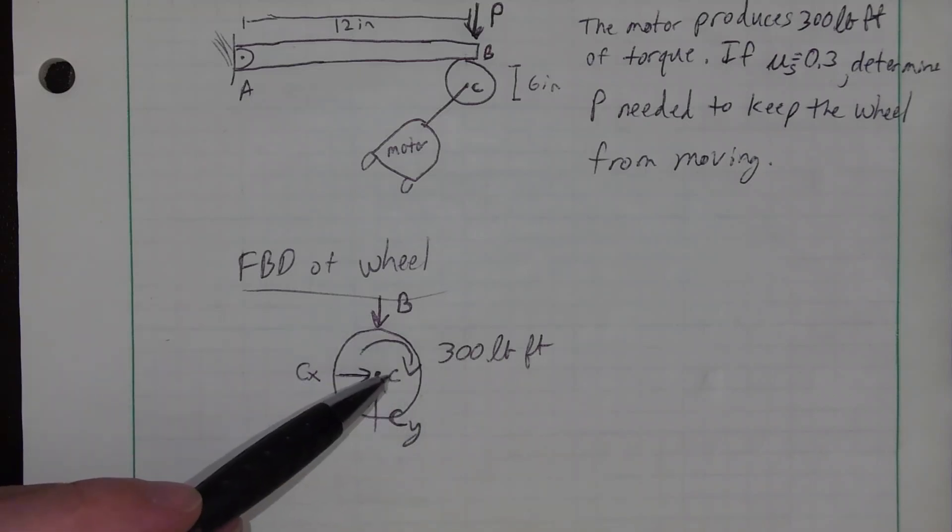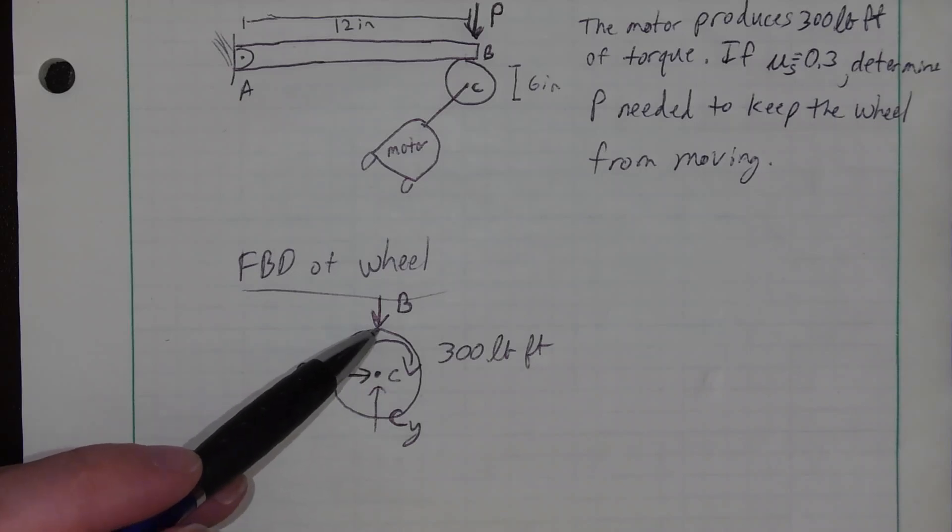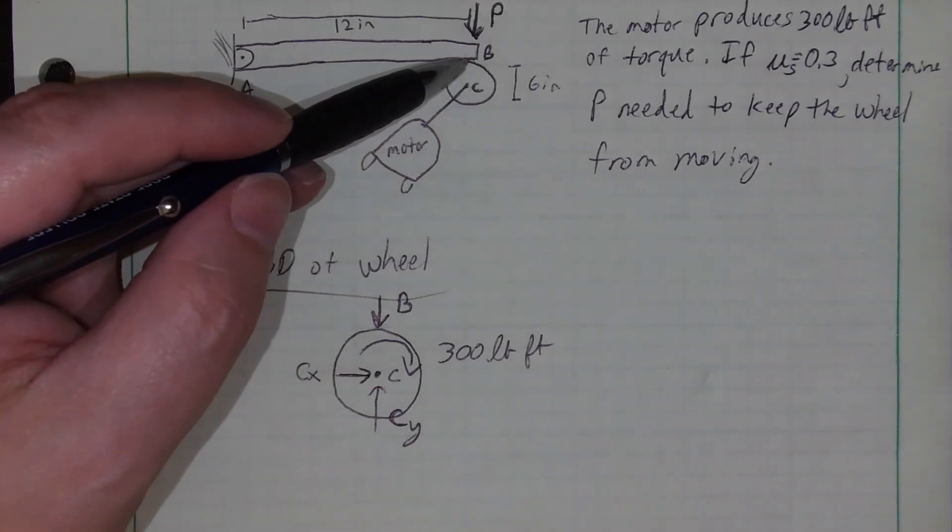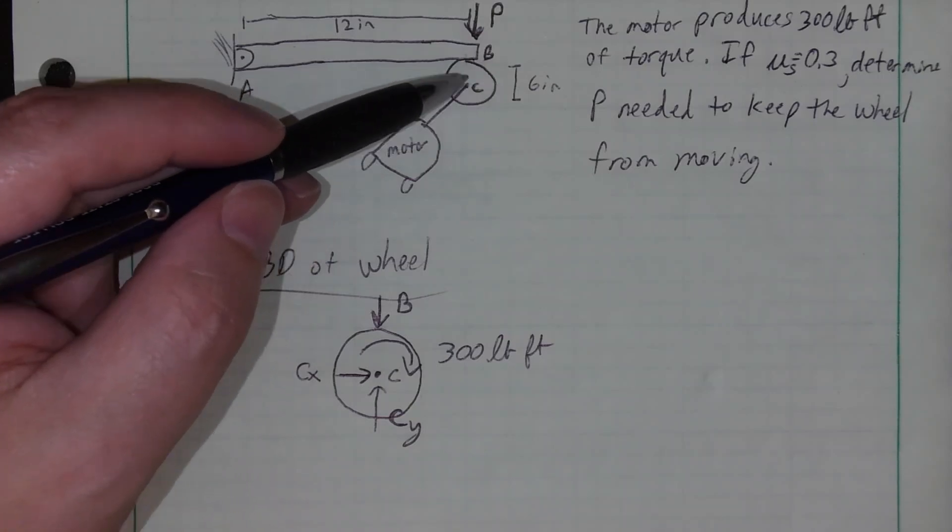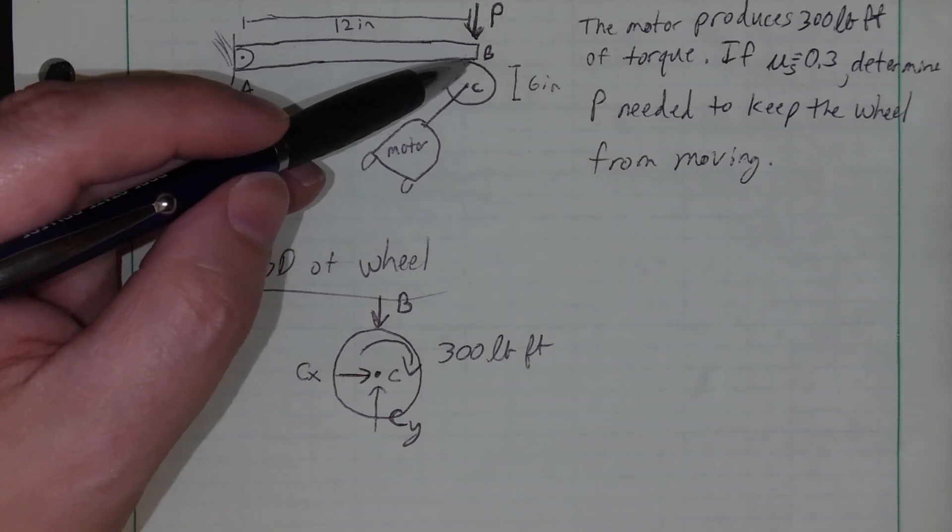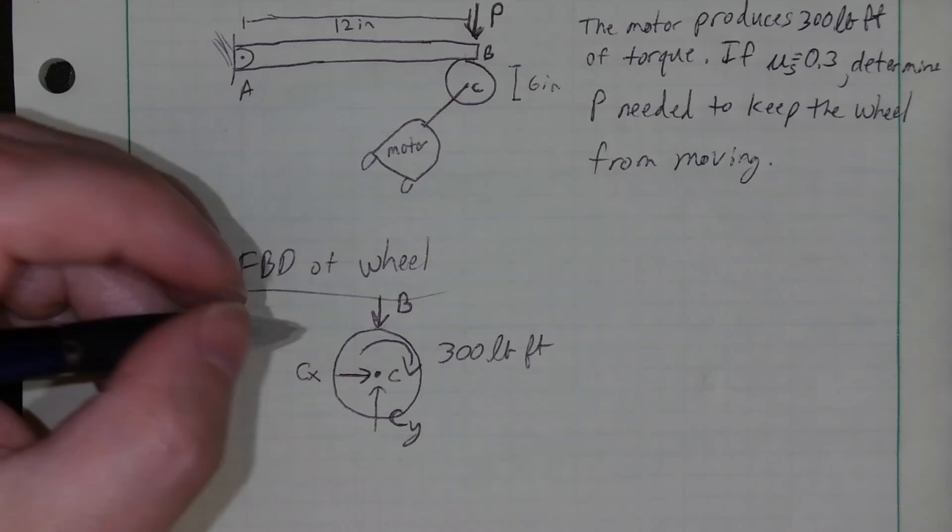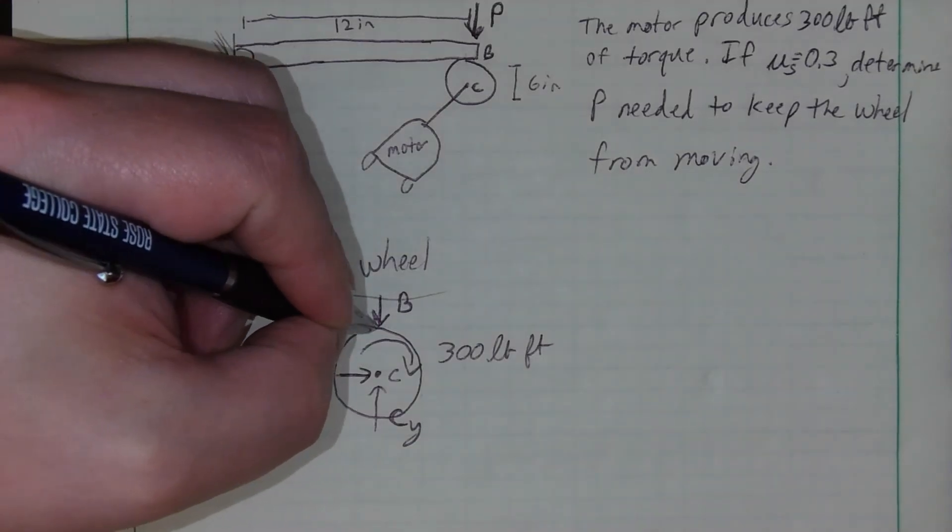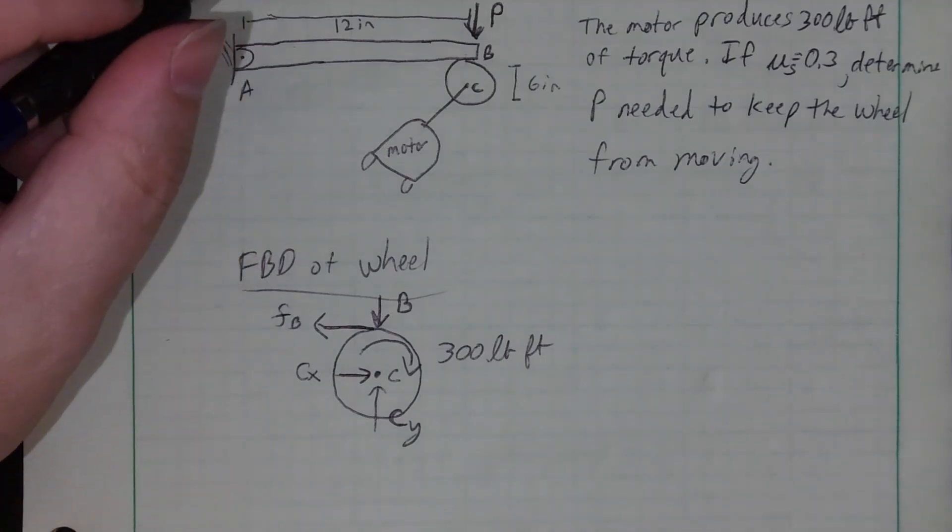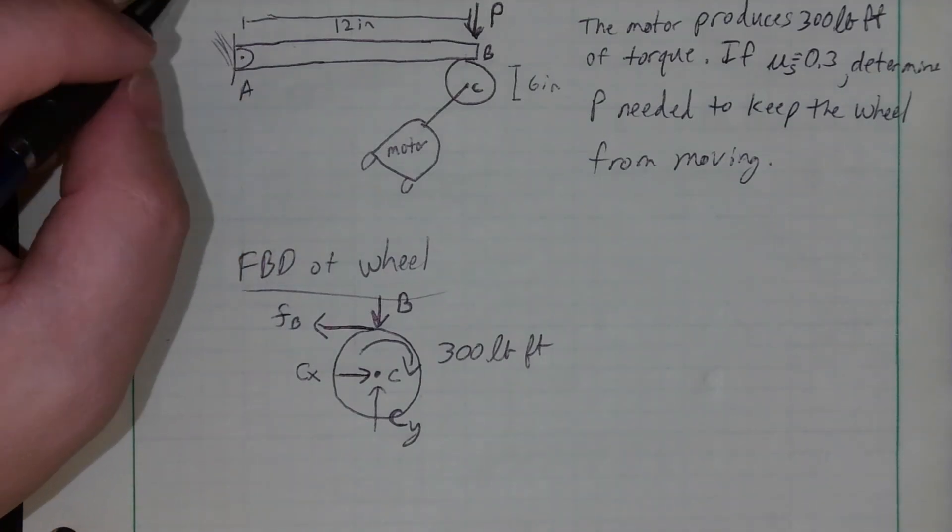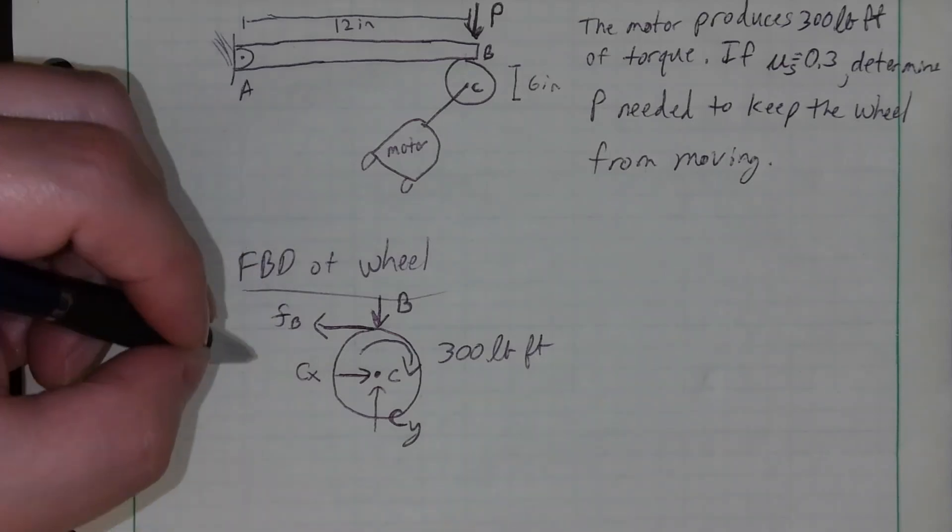So let's say it's going this way. That means right here at the slip point, the wheel's trying to slide in a clockwise fashion. That means the friction force needs to oppose that. The friction force actually needs to be opposing the motion, so I'll draw a friction force there.